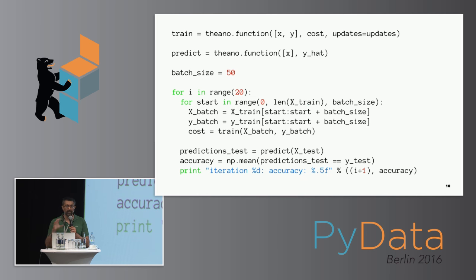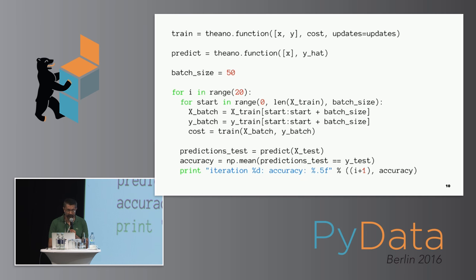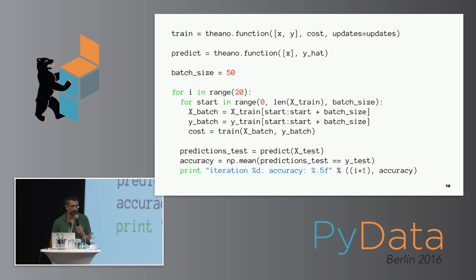Training involves taking batches of training data and labels, then calling train, which calls updates that optimize the parameters to minimize the cross-entropy loss — the difference between the predicted label probabilities and the actual labels. We iterate this 20 times across our training data, after which we hopefully end up with some parameters we can use to make future predictions on unseen data. That's the core essence of deep learning.